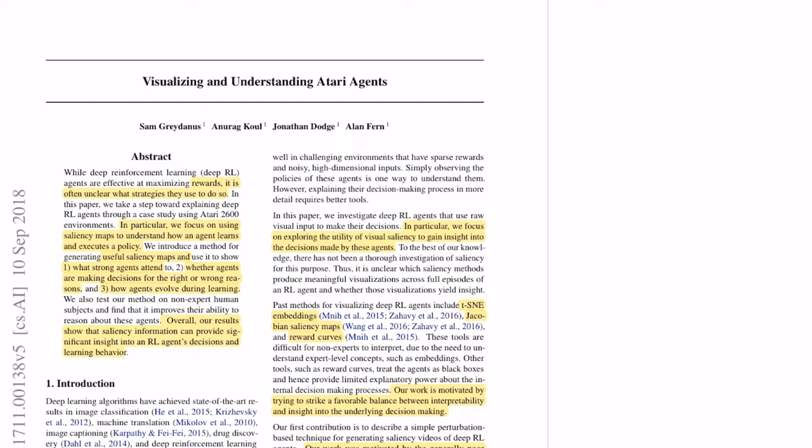Hey everyone, today I'll be talking about this paper: 'Visualizing and Understanding Atari Agents', published in 2018. This paper is by Sam Gray, Danis Anurag Call, Jonathan Dodge, and Alan Furt.